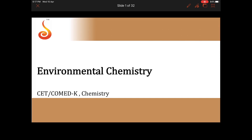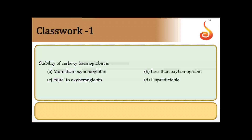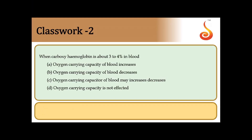Now let us discuss objective questions. The stability of carboxyhemoglobin compared to oxyhemoglobin — carboxyhemoglobin is more stable, so the answer is option A. When carboxyhemoglobin is about 3 to 4 percent in the blood, it starts losing its oxygen-carrying capacity — answer is option B.